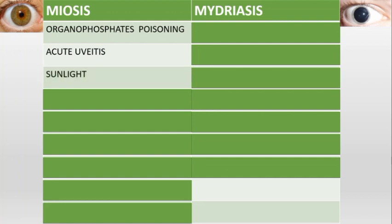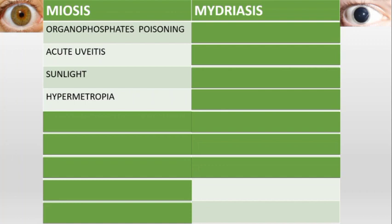Sunlight — this can be shown by putting a torch in front of the pupil; the pupil will constrict. The eye does not want more light to enter because it can cause damage inside, so physiologically it reduces the size of the pupil to reduce incoming light and reduce damage. Hypermetropia — farsightedness: in these patients the eye is usually small, and so is the pupil.